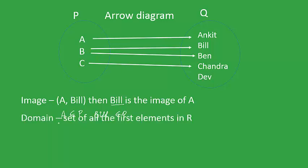Next, let's look into the definition of domain. The set of all the first elements in R is called the domain of the relation. Since P consists of three elements, the domain of R is the set containing three elements: A, B, C.